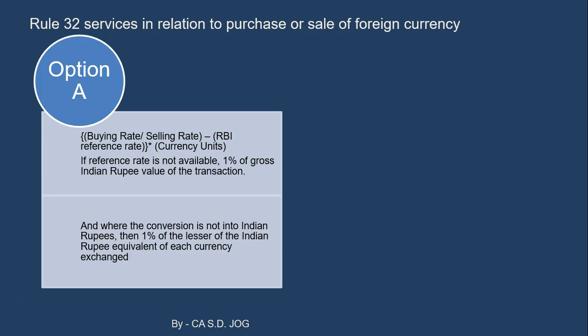We will take an example to make this law clear. And where the conversion is not into Indian rupees — say euros converted into dinars, dirhams, or USD — it is not converted into INR. Then 1% of the lesser of the Indian rupee equivalent of each currency exchanged. We will see one example so it will be more clear.